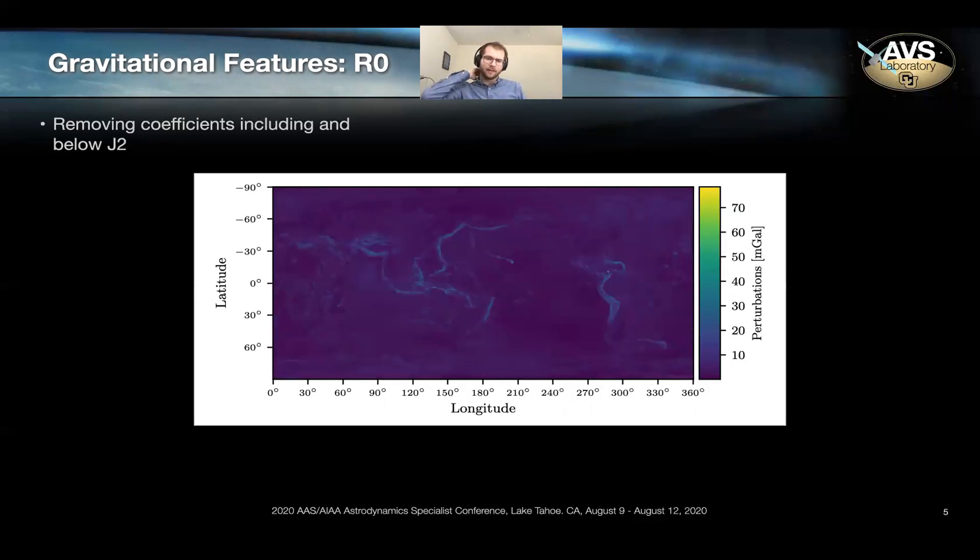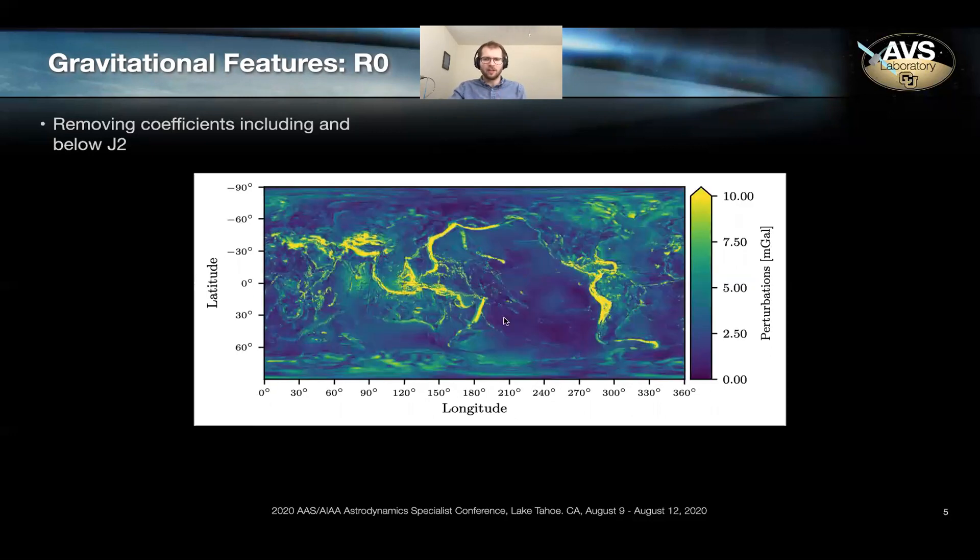And you see here that you see discontinuous features as the dominant perturbations, you see things like the Andes or tectonic shells or the Himalayas. I'm going to go ahead and rescale this so it's a little bit easier to see these features. But these dominant perturbations arise from discontinuous geologic features, tectonic shelves, mountains, valleys, things like that.